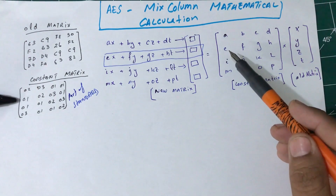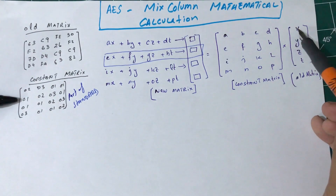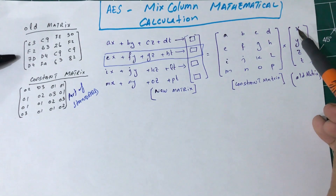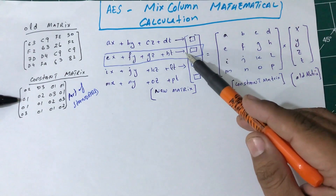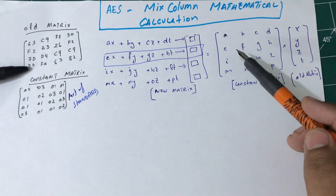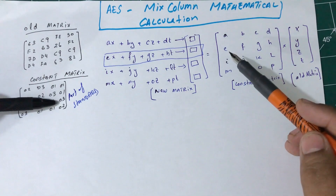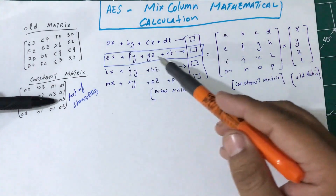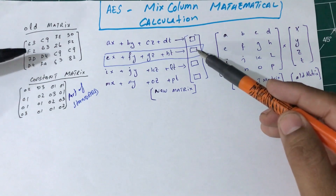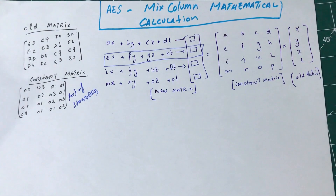You take the constant matrix row — say 01, 02, 03, 01 — and individually multiply each value and add them together. To transform f2: 63 multiplied by 01, plus f2 multiplied by 02, plus f7 multiplied by 03, plus d4 multiplied by 03. Once you multiply and add them all up, this gives the new value of f2 after the MixColumns transformation. That's how you do it.